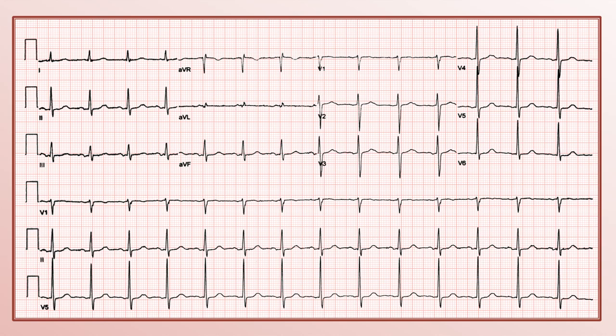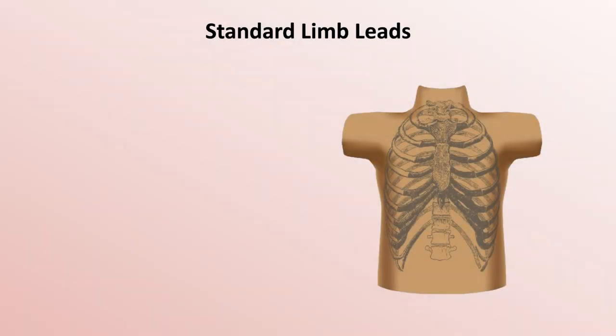I'll now discuss the three major types of leads, starting with the standard limb leads. For reference, here is a torso with a ribcage drawn in, and I'll make it just slightly transparent to reveal the approximate location and orientation of the heart inside.